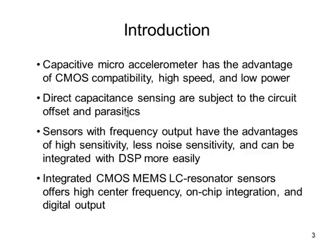But if you measure the capacitance change directly, you have to consider the influence of circuit offset, parasitics, and stabilize the bias at the input node of the sensing circuit.